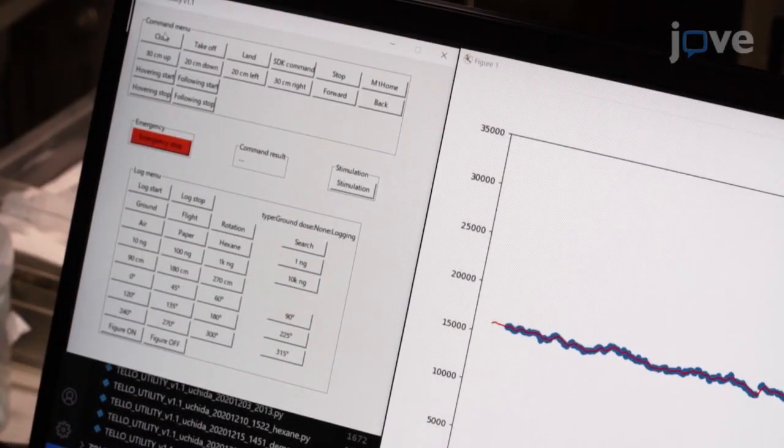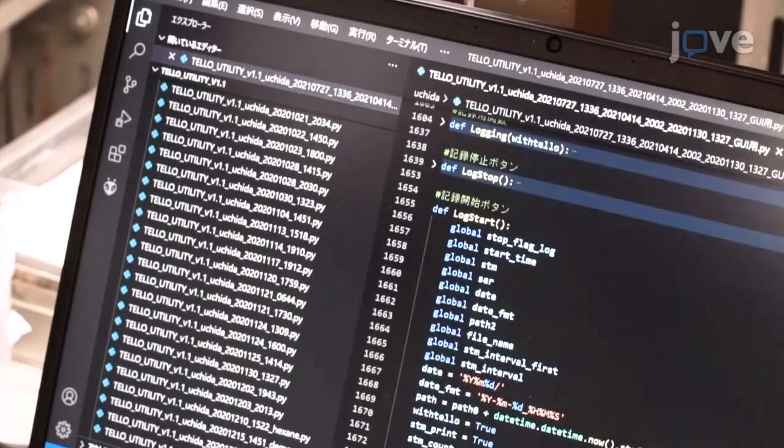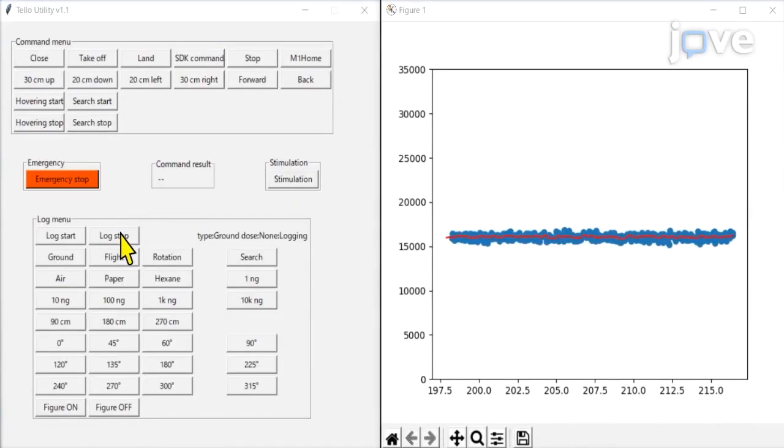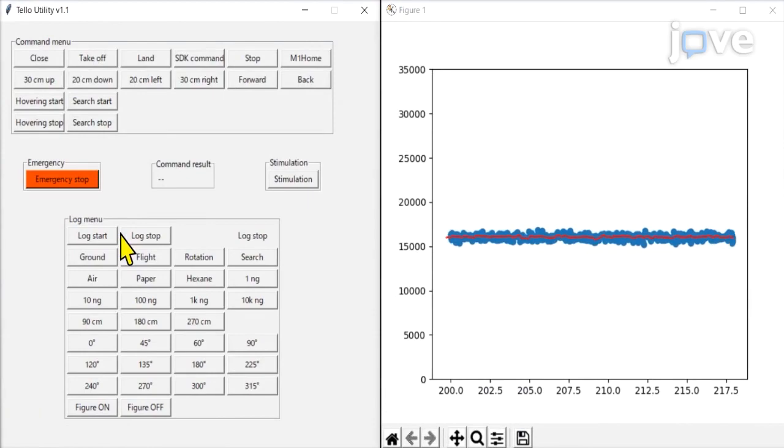Five seconds after pressing the log start button, initiate odor stimulations. Press the log stop button on the graphical user interface or GUI to stop recording.